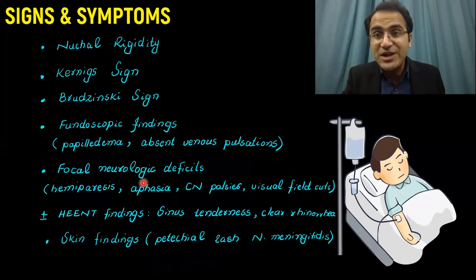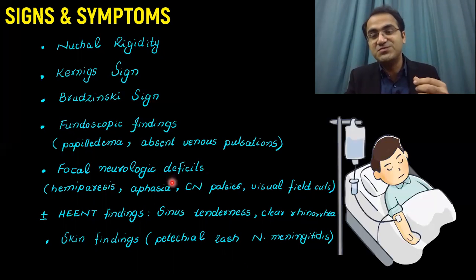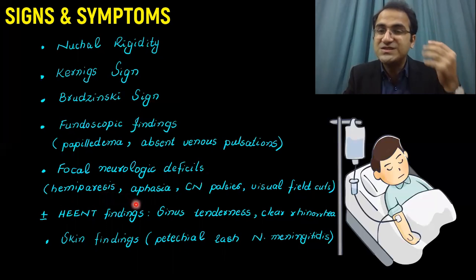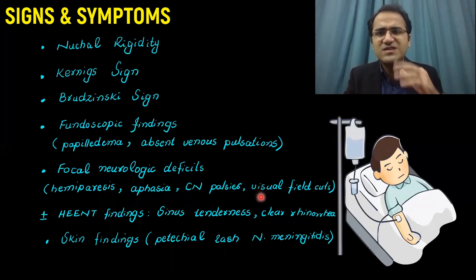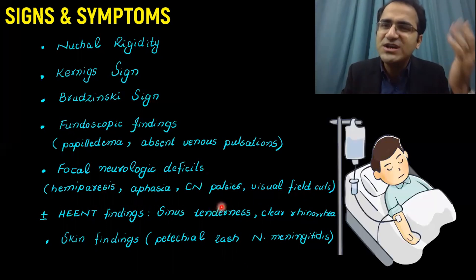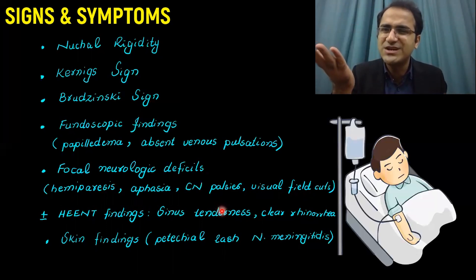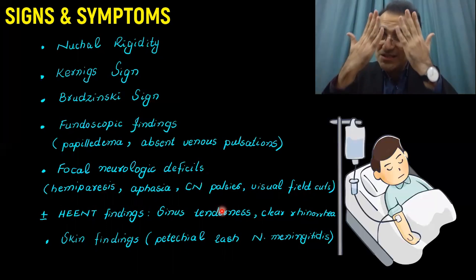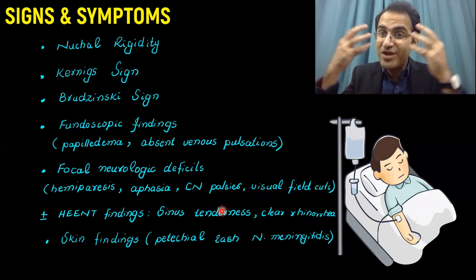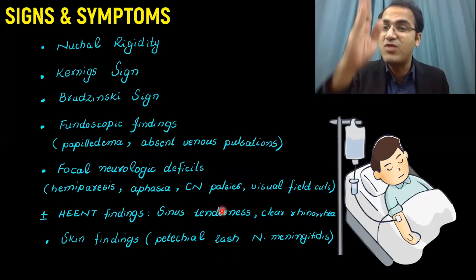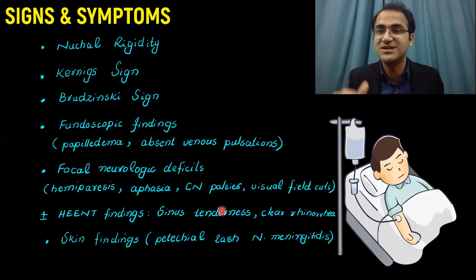You might also find focal neurological deficits — hemiparesis, aphasia, cranial nerve palsies, visual field cuts — because bacteria have reached the brain. You might also find sinusitis on examination. The sinuses are drained by veins that go to the brain, so infected sinuses can carry bacteria to the brain, resulting in meningitis.